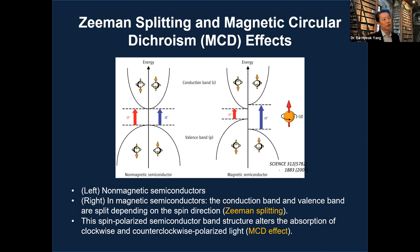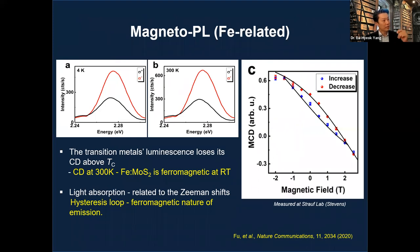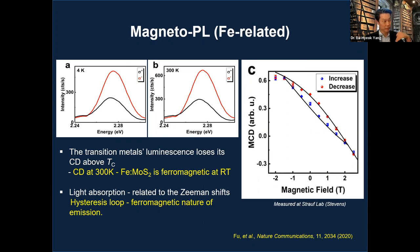For context: a non-magnetic semiconductor has conduction and valence bands with a forbidden gap, but a magnetic semiconductor splits these bands by spin direction — this is Zeeman splitting. The spin-polarized band structure alters absorption of clockwise and counterclockwise polarized light, producing a magnetic circular dichroism (MCD) effect. Our data shows circular dichroism at 300 K (room temperature), and since transient luminescence loses circular dichroism above the Curie temperature, the presence of CD at 300 K confirms ferromagnetic behavior. The MCD hysteresis loop further confirms ferromagnetism.